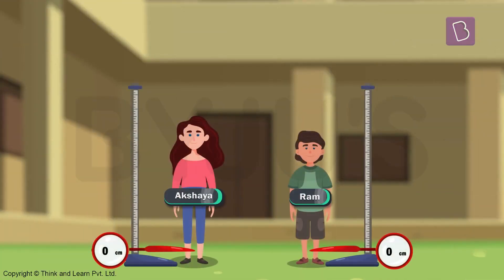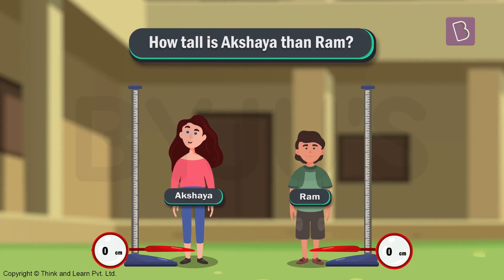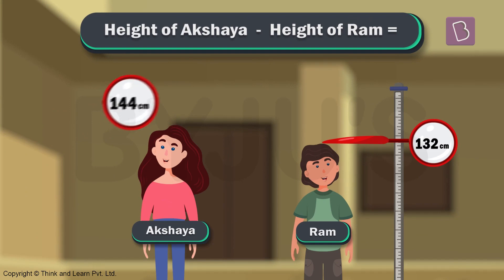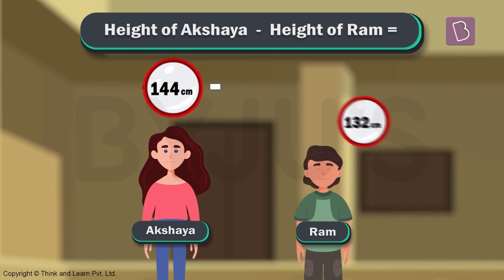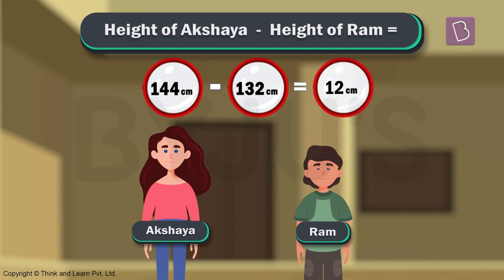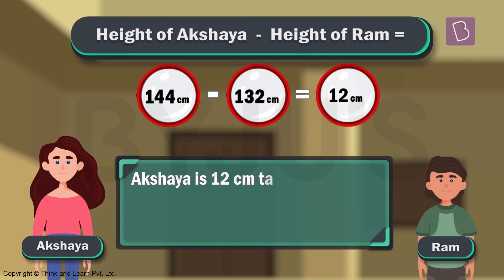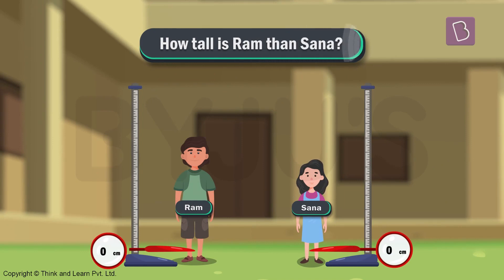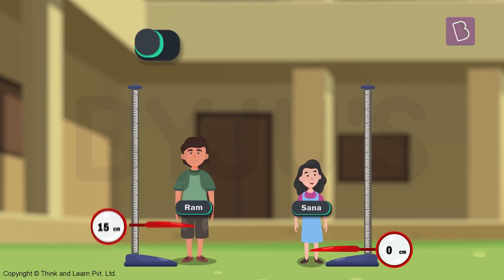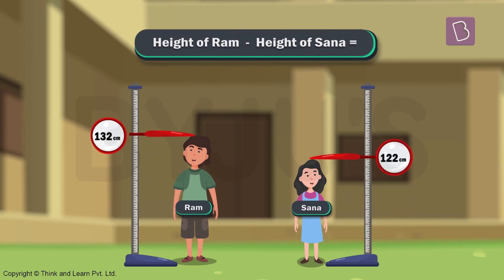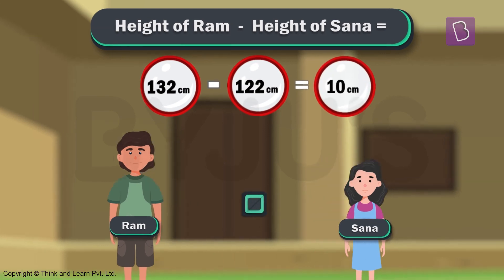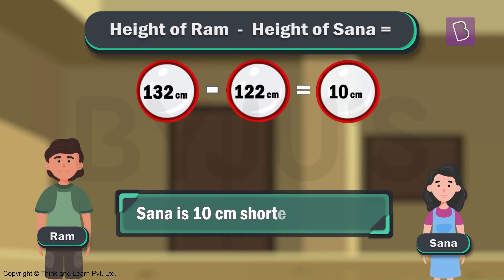Now, how tall is Akshaya than Ram? It will be the height of Akshaya minus the height of Ram, which is 144 centimeters minus 132 centimeters, which equals 12 centimeters. Therefore, Akshaya is 12 centimeters taller than Ram, or in other words, Ram is 12 centimeters shorter than Akshaya. How tall is Ram than Sana? It will be 132 centimeters minus 122 centimeters, which equals 10 centimeters. Therefore, Sana is 10 centimeters shorter than Ram.